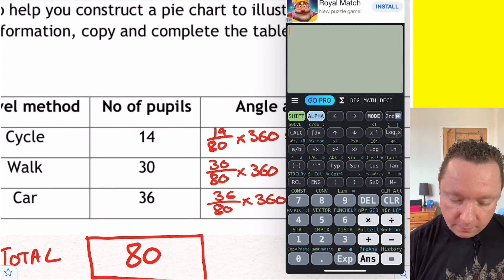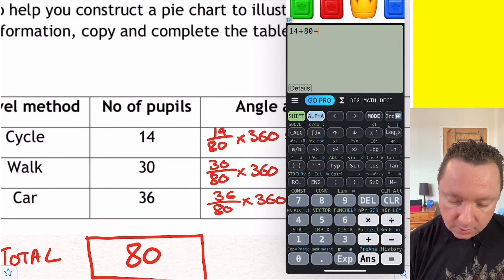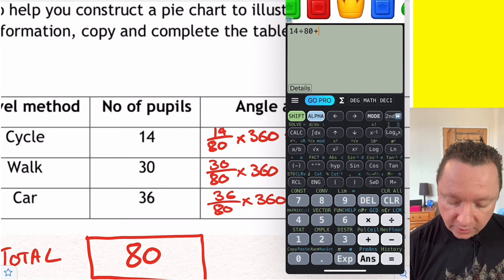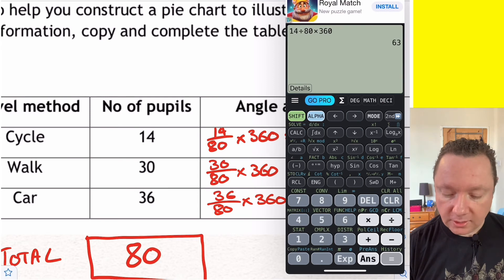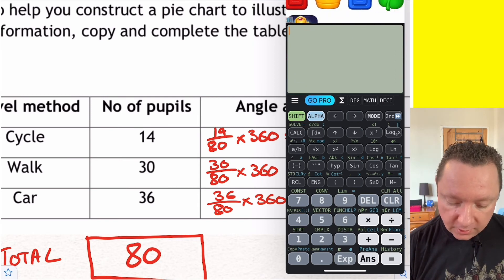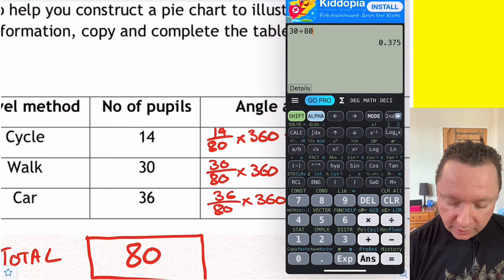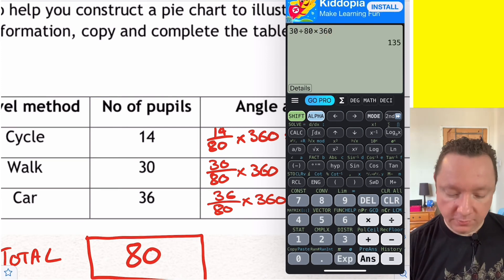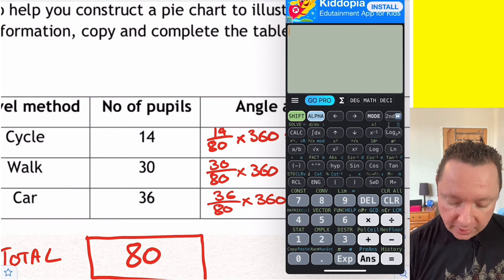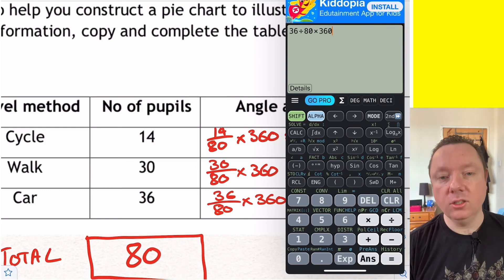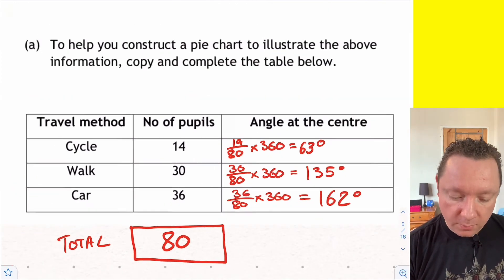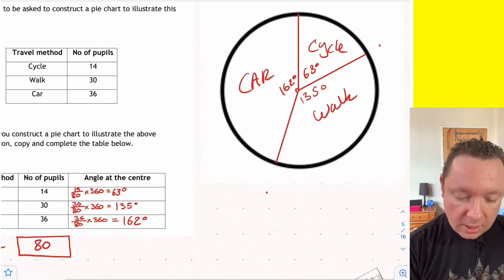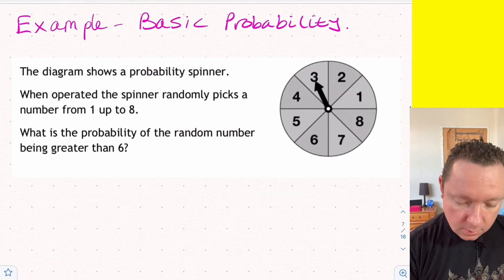So for the first one, it's just 14 divided by 80 times 360. I'll show you this on my calculator. So for the first one, I did 14 divided by 80 times 360, and I just pressed equals, and I got 63. The second one, I did 30 divided by 80 times 360, and I got 135 degrees. And then the last one, I did 36 divided by 80 times 360, and I got 162 degrees.